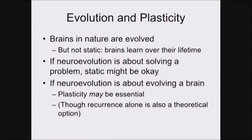Brains in nature are of course a product of evolution, but brains in nature are not static structures. We learn over our lifetimes, as do most animals with brains. So if we're using evolution in neural networks — which we sometimes call neuroevolution — to solve just one problem, static structures are okay. But if we're using neuroevolution to evolve something analogous to brains we see in nature, then plasticity may be essential — brains in the sense that they can learn over their lifetime. That's where the meta-learning concept comes in, because brains learn, and they're also a product of evolution, which some of us characterize as a learning process. So we're definitely talking about meta-learning.